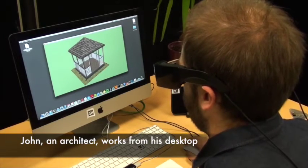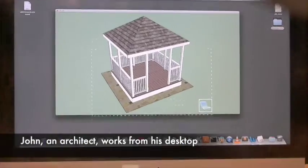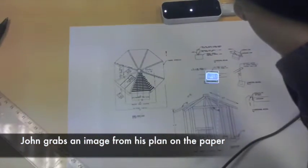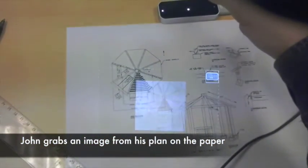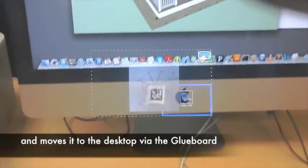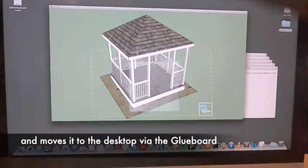John is an architect working independently from his home office desktop. As he finishes a computer model, he decides to add a section view from the paper plan. He takes a snapshot of the drawing using Glui and adds it to the sketch with a hand gesture.